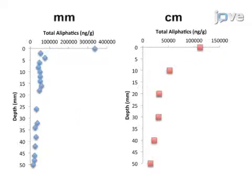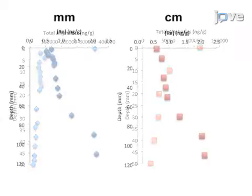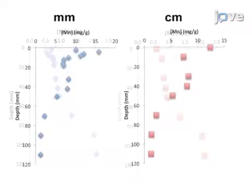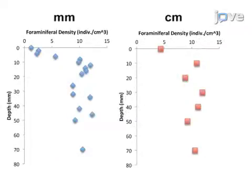The same factors were also analyzed at the centimeter scale. At this scale, the changes in the aliphatic concentrations, the changes in redox-sensitive metals, and the changes in benthic foraminaferral density were all diminished by coarser sampling.